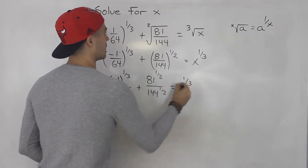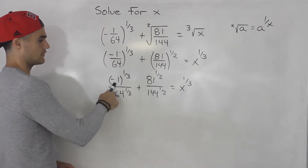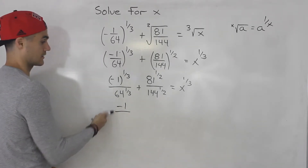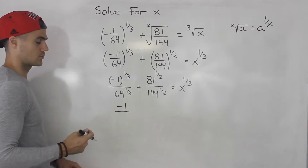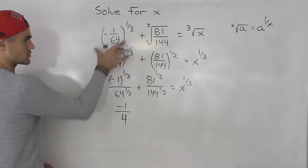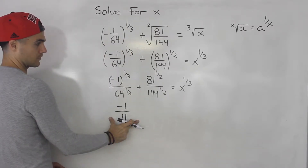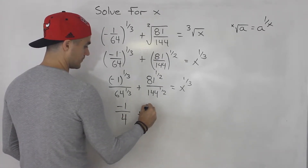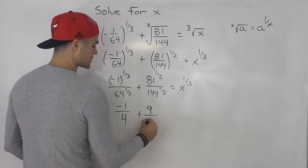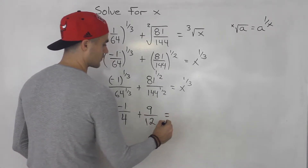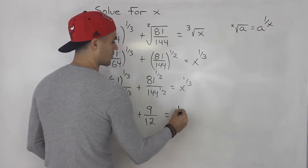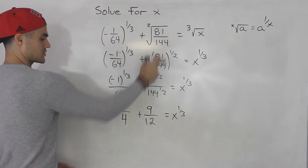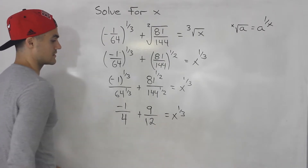And then this is x to the power of 1 over 3. Now, negative 1 to the power of 1 over 3 is negative 1 — the third root of negative 1 is just negative 1. 64 to the power of 1 over 3: the third root of 64 is 4. So this simplifies to negative 1 over 4. Then 81 to the power of a half is the square root of 81, which is 9. 144 to the power of a half is 12 — the square root of 144 is 12. And this is still x to the power of 1 over 3. So it's already looking a lot better.